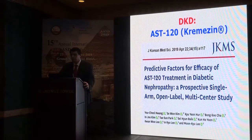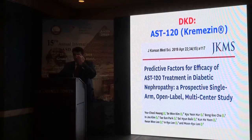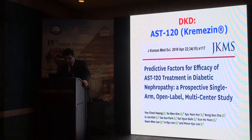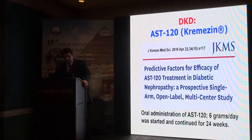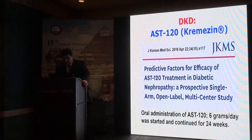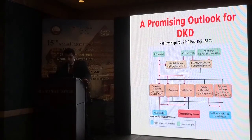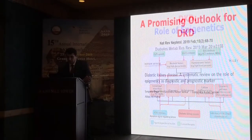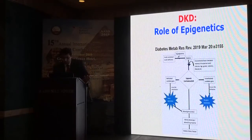Regarding kremezin (AST-120): this oral adsorbent acts as a probiotic that may preserve the microbiome and prevent absorption of uremic toxins. It has been used in the market and can be administered orally. Promising drugs overall include GLP-1 agonists, SGLT2 inhibitors, RAS blockers, and anti-methylation agents targeting epigenetic mechanisms.